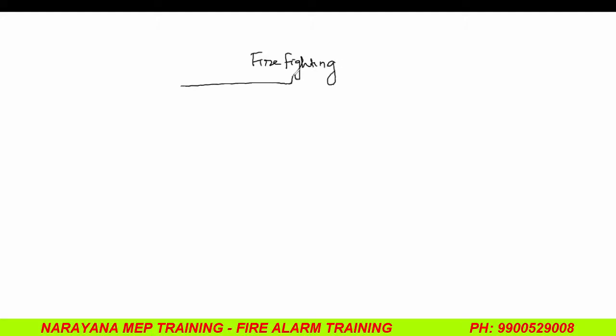So, in the first session, we learned firefighting, basically divided into two branches. What are the branches? Abdul Harish — hydrant and fire alarm. Basically, suppression and detection.